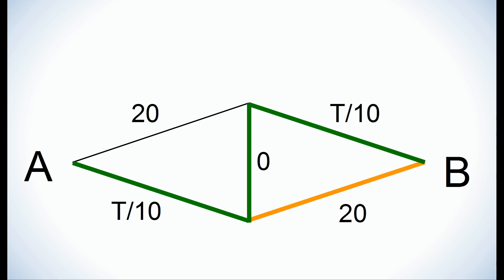Now by the same logic as before, the T over 10 road is going to at least be as fast, and therefore it's the right choice.